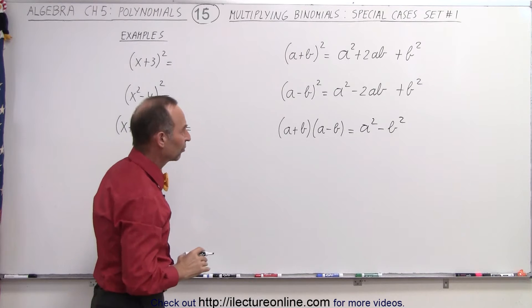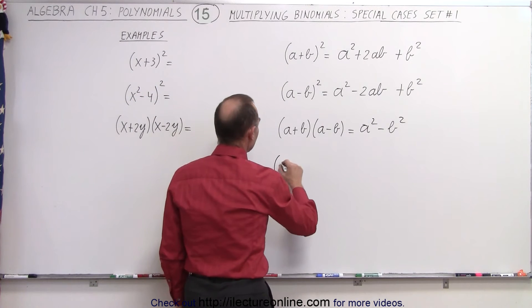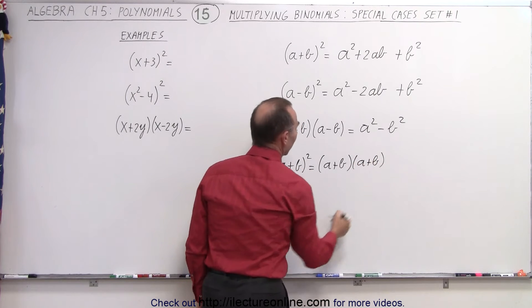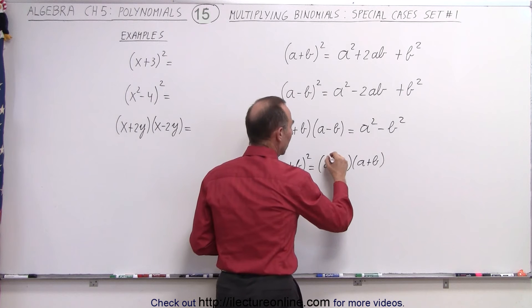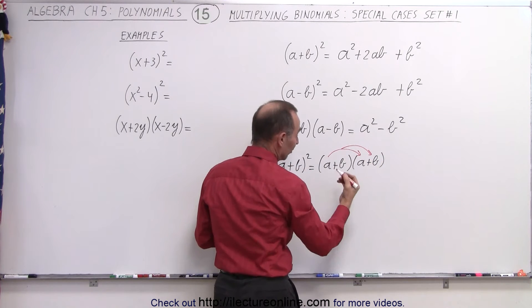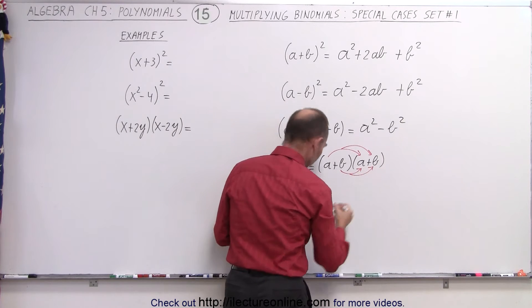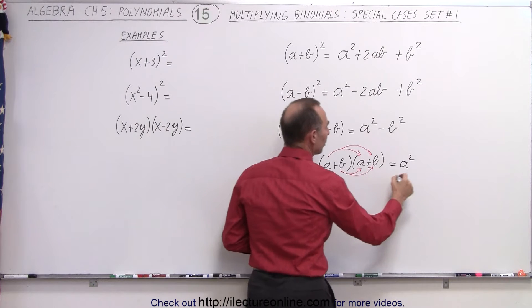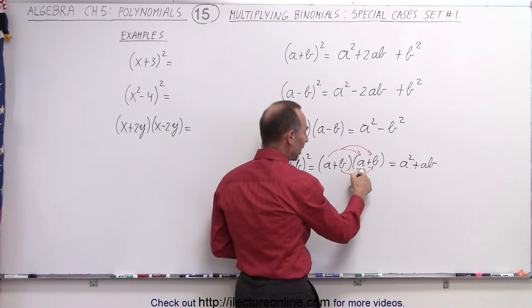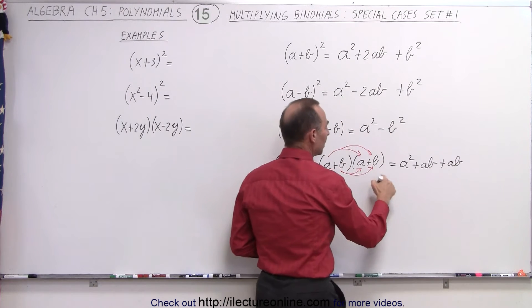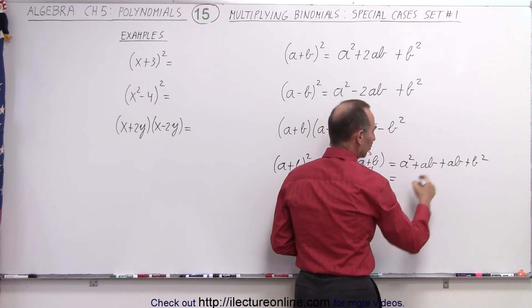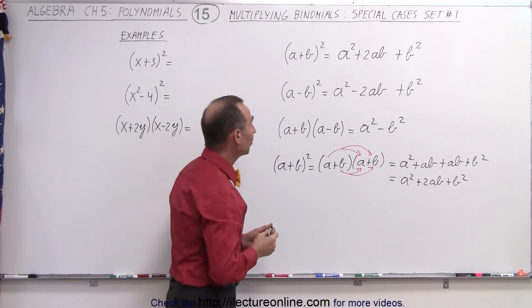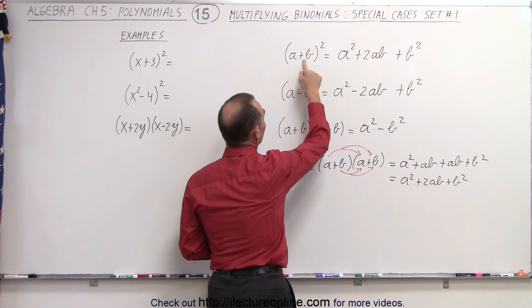Now, how do we know that's the case? Let's show why it is indeed true. If we take a plus b and we square it, that's a plus b times a plus b. Applying the distributive rule, we multiply the first term times each of the two terms in the second binomial, and the second term times each of the two terms. That gives us a squared plus ab plus ab plus b squared, and combining like terms: a squared plus 2ab plus b squared.